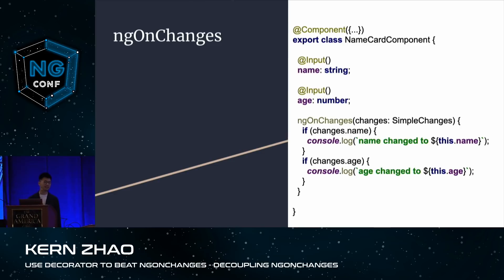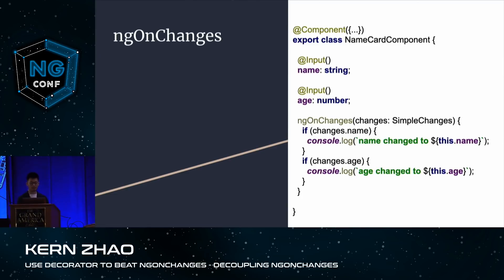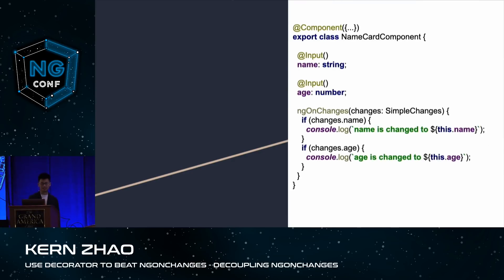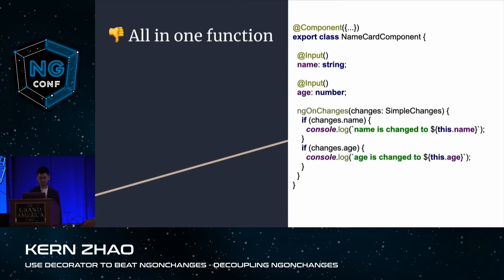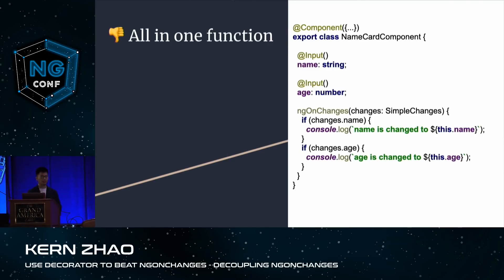You might have your answer — ngOnChanges. Yes, ngOnChanges works. Basically, if any one of the input properties gets changed, the ngOnChanges lifecycle hook will be triggered, and then we can use an if statement to determine which input property changed. However, I'm not a big fan of ngOnChanges, because we need to handle all input property changes inside one giant block and use if statements to separate them out.